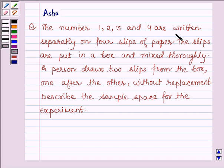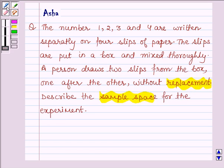2, 3, and 4 are written separately on four slips of paper. The slips are put in a box and mixed thoroughly. A person draws two slips from the box, one after the other, without replacement. Describe the sample space for the experiment.